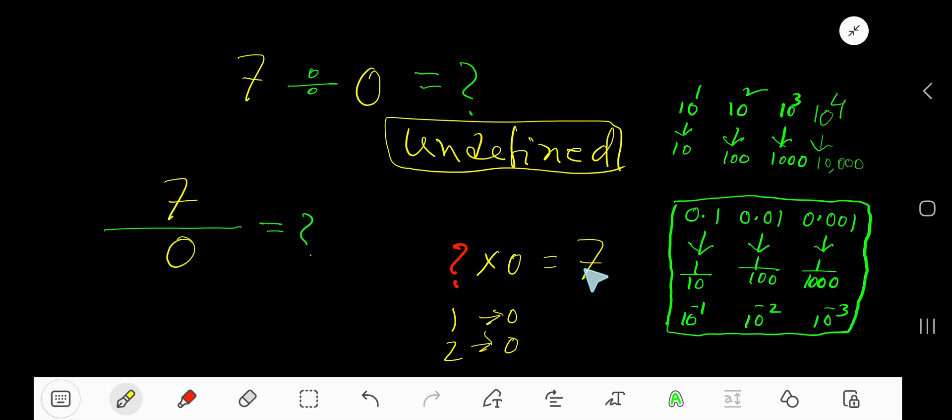So 7 divided by 0 equals undefined - that is, there is no answer.